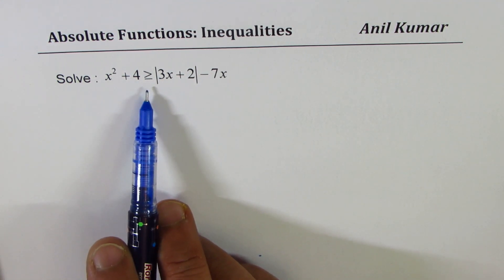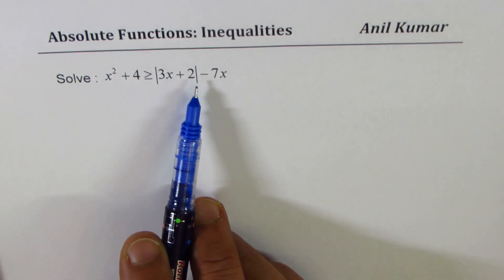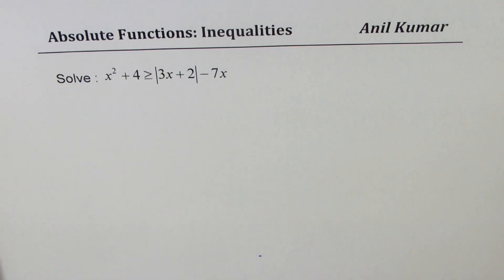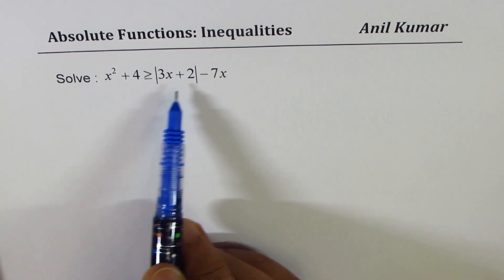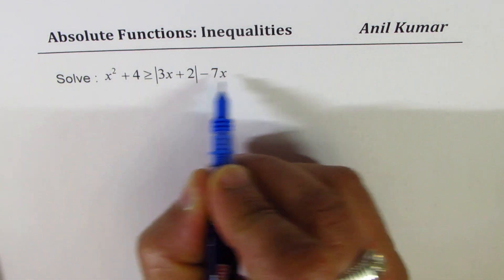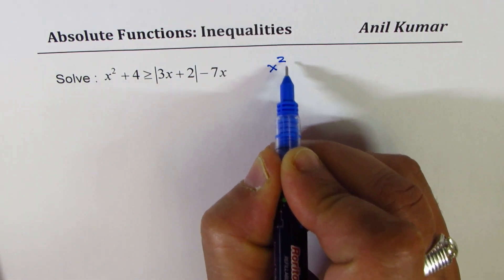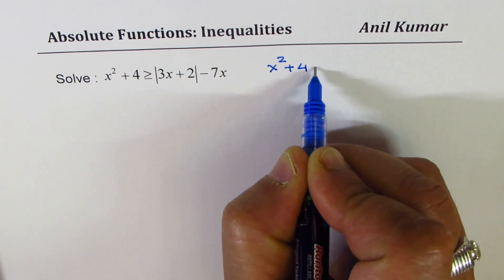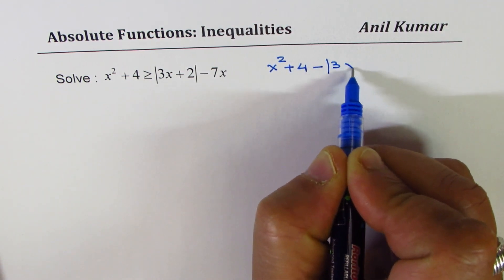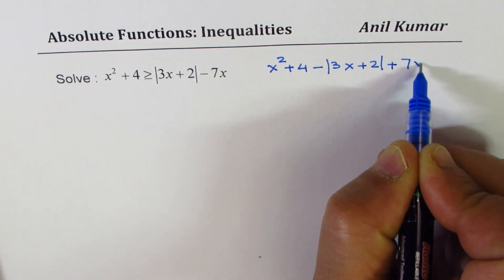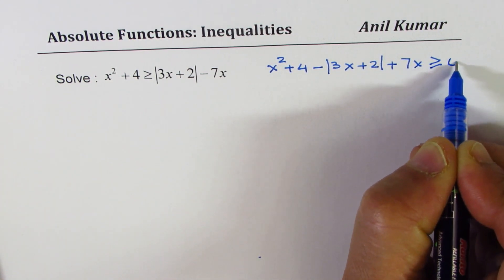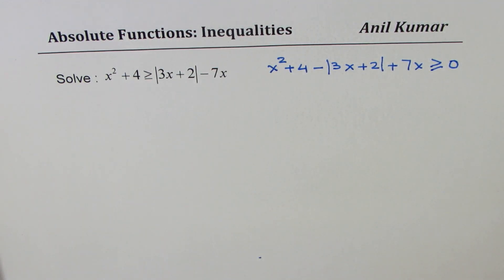In the first step, let's bring all the terms to one side and rewrite this equation. We can write this as x² + 4 minus the absolute value of 3x + 2 plus 7x, greater than or equal to 0.